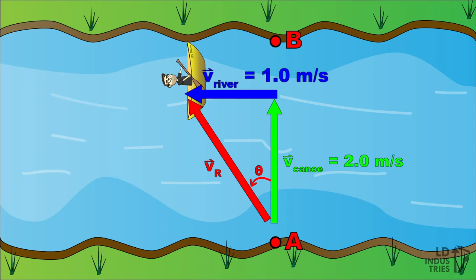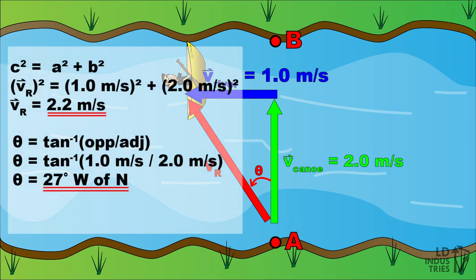We can even work out how fast we'll be moving. We can use the Pythagorean formula to get the magnitude of the resultant, which works out to 2.2 meters per second, and the inverse tan ratio to get the angle, which will be 27 degrees west of north.